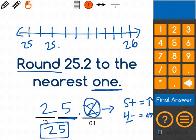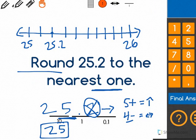25.2 on this would be right here, which is much closer to 25 than it is to 26. That's why we round to 25.